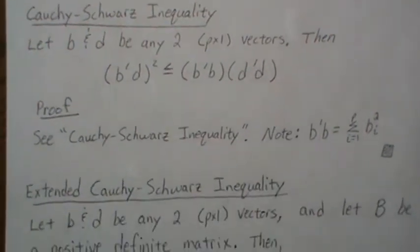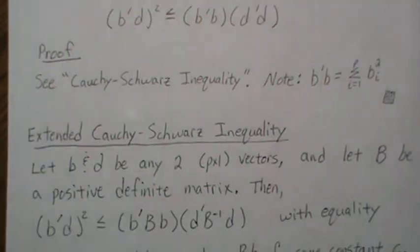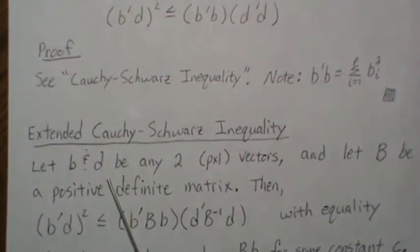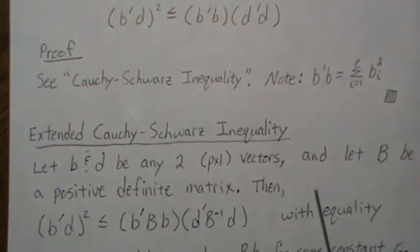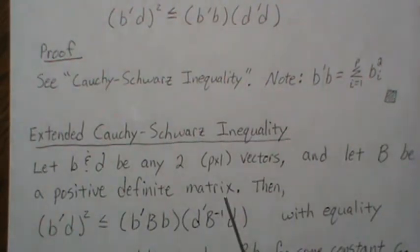So now the extended Cauchy-Schwarz inequality is this. So we're going to let B and D be any two P by 1 vectors again. But we're going to let B be a positive definite matrix, which means it has an inverse matrix.